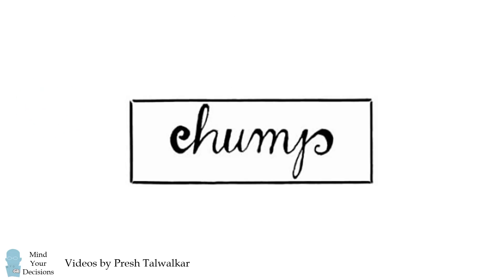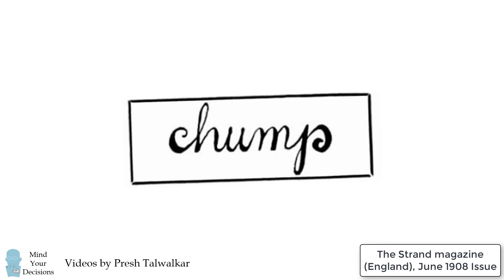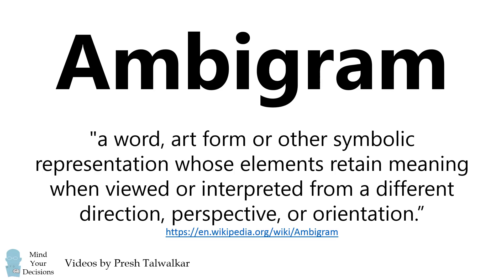In 1908, the British magazine Strand published this interesting curiosity. The word chump reads exactly the same way upside down. This is an example of an ambigram, which is a word, art form, or other symbolic representation whose elements retain meaning when viewed or interpreted from a different direction, perspective, or orientation.